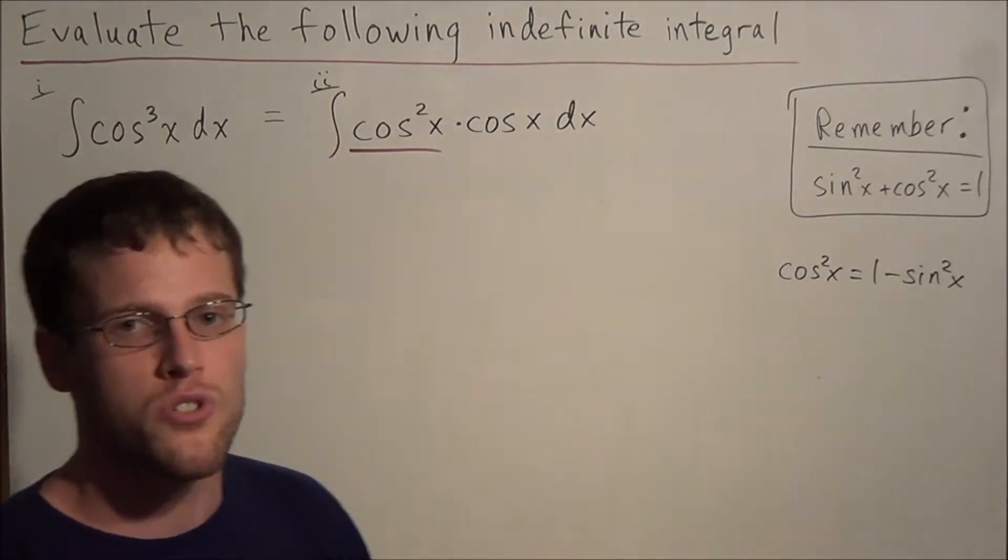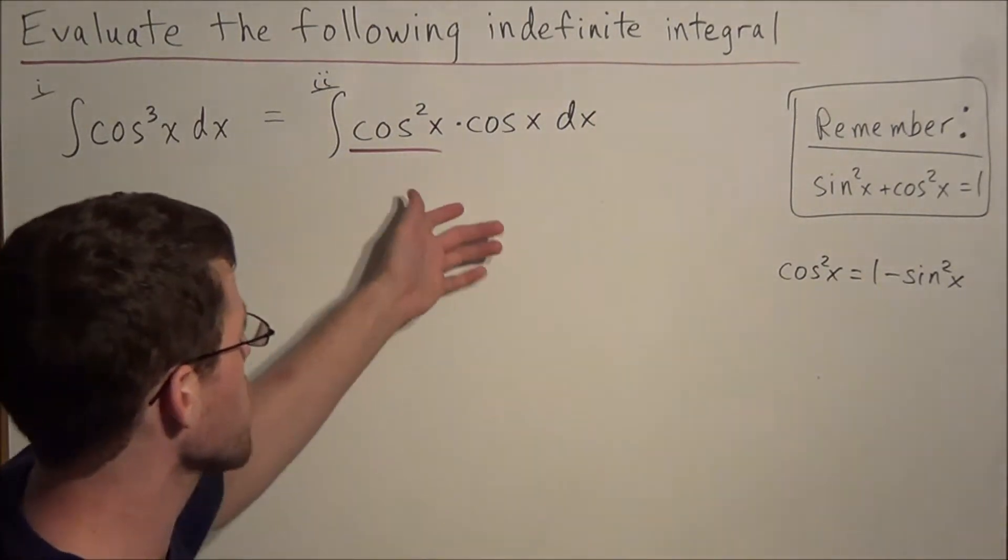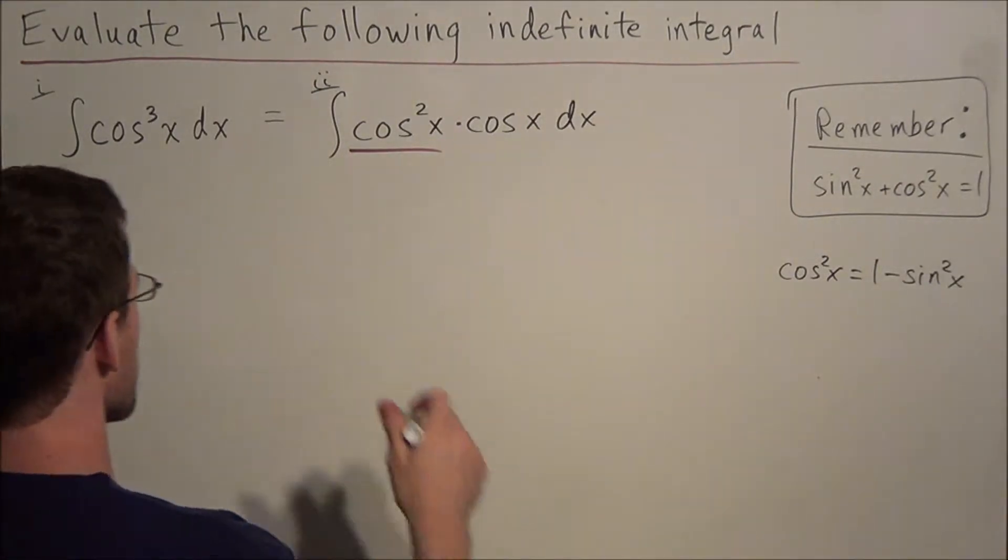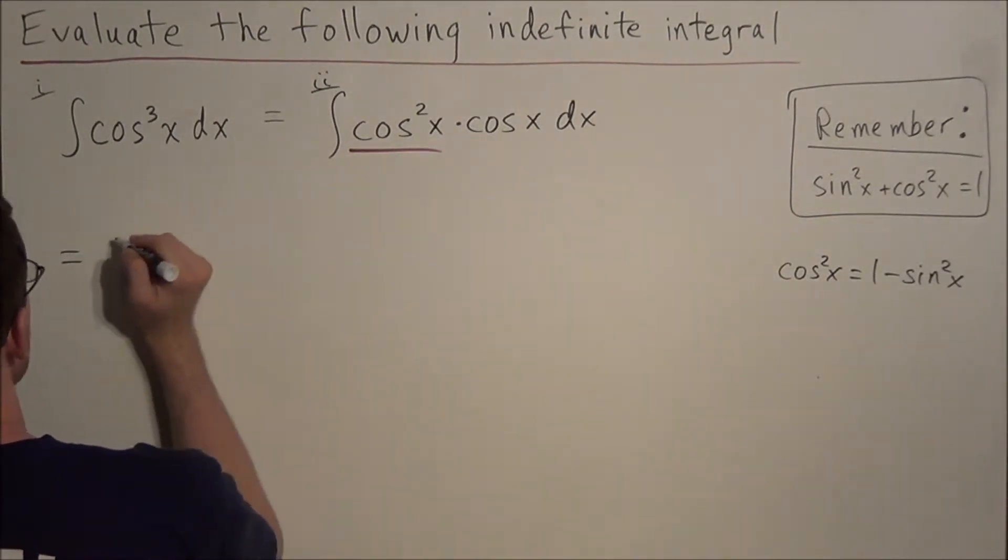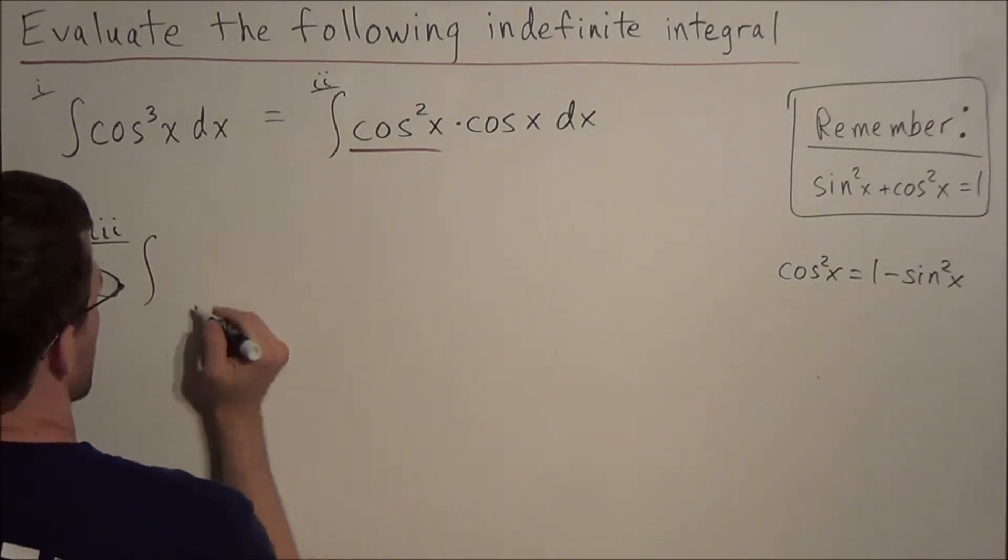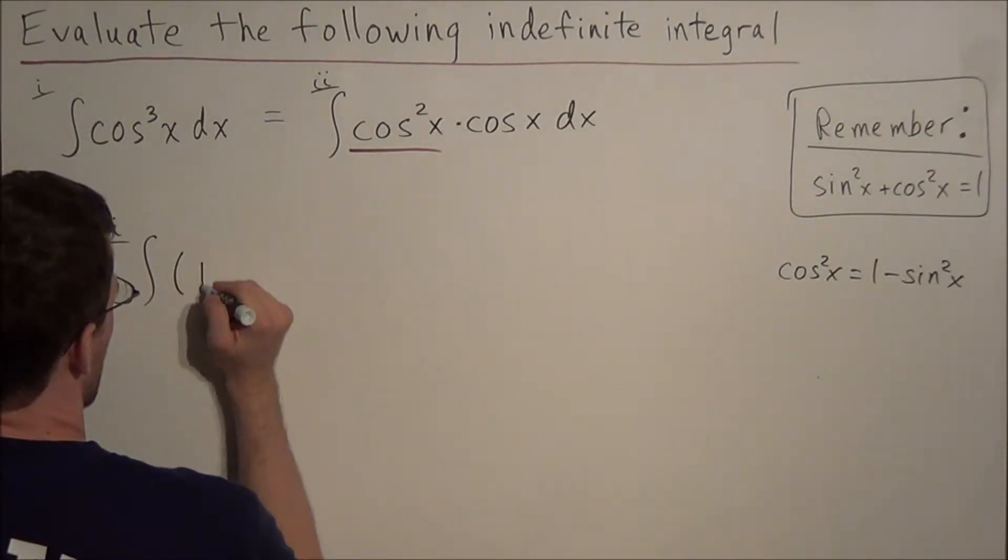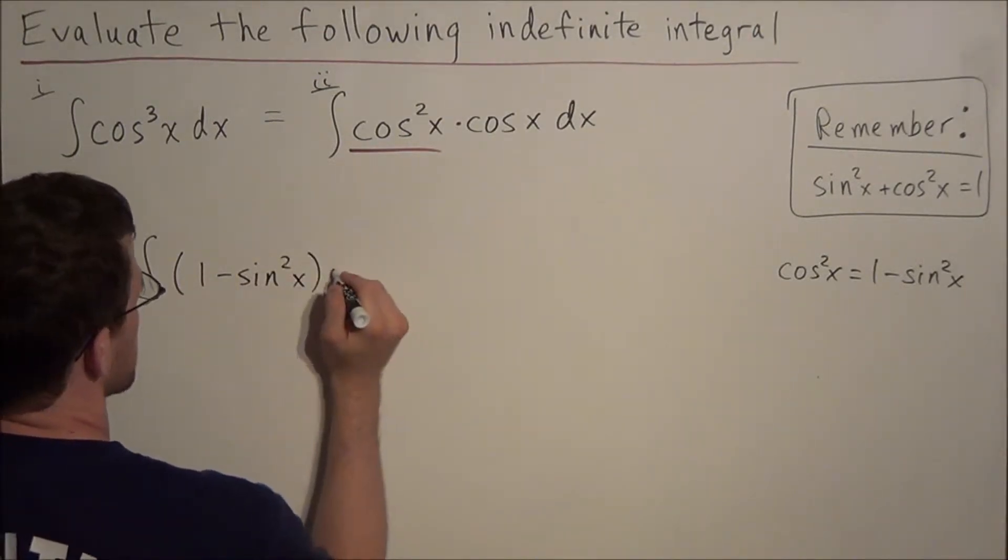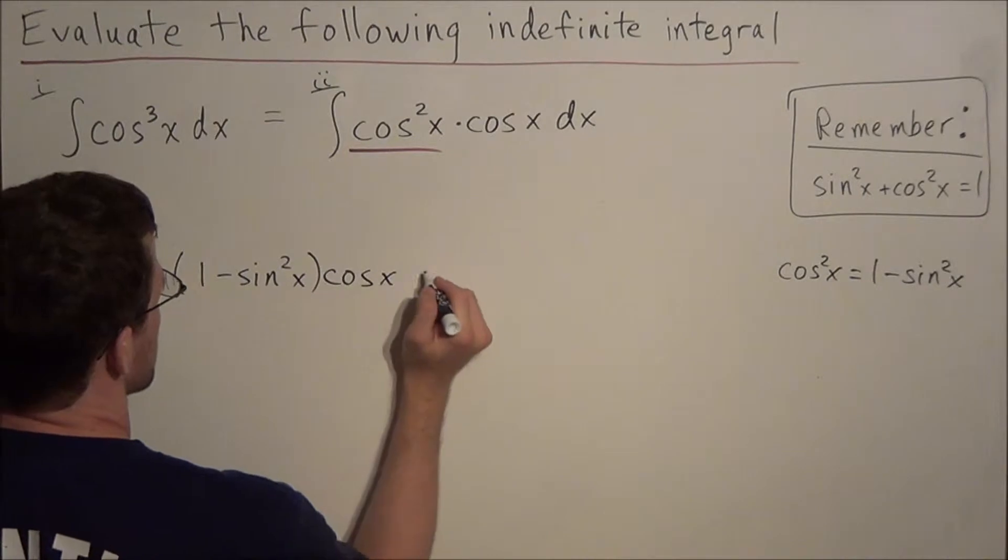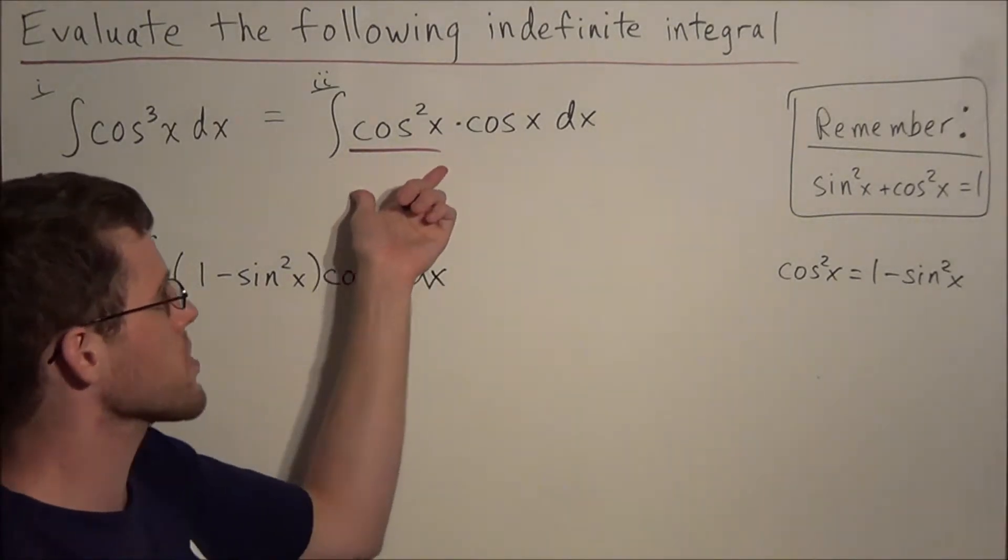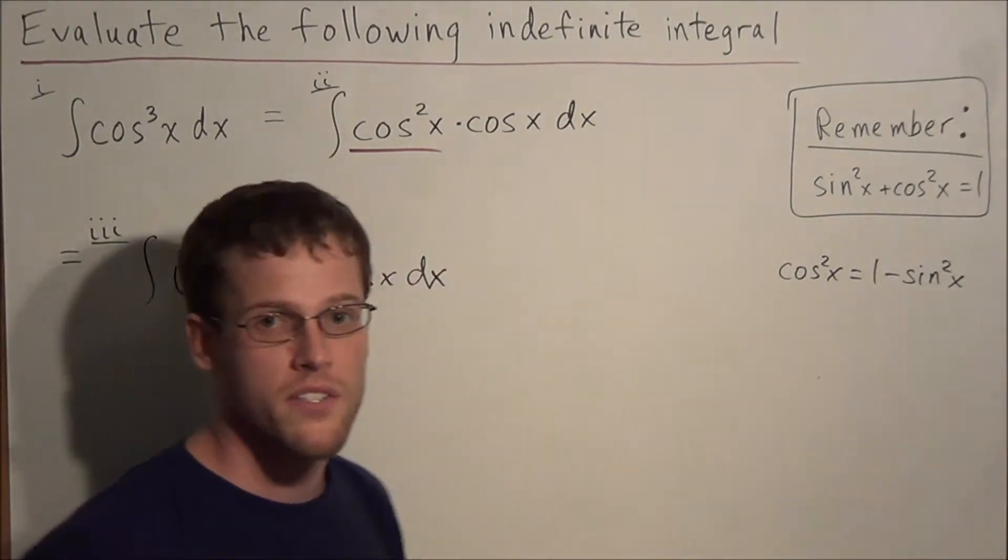So now we're going to make the substitution, but it's important to focus on why we're making the substitution, which we'll do in a moment. So for line 3, we could rewrite this integral as 1 minus sine squared x times cosine x dx. So remember, all we did was substitute for cosine squared x, and we replaced it with 1 minus sine squared x.